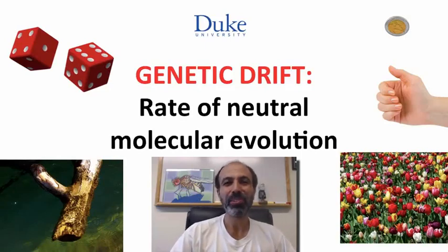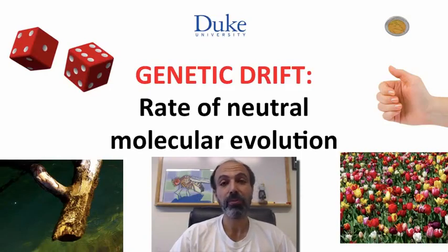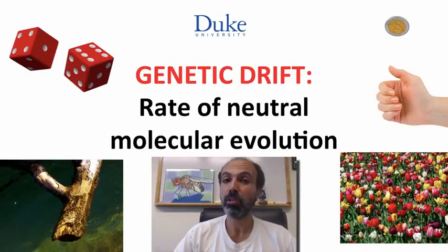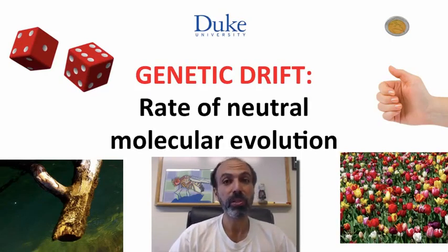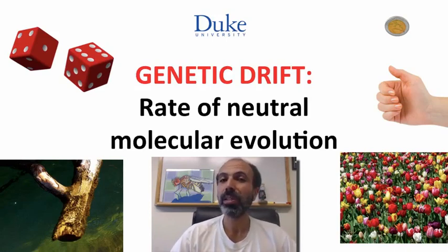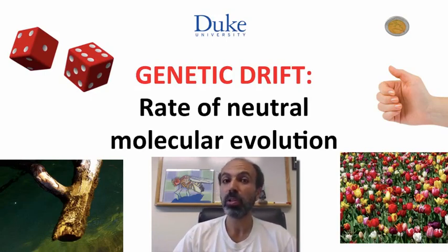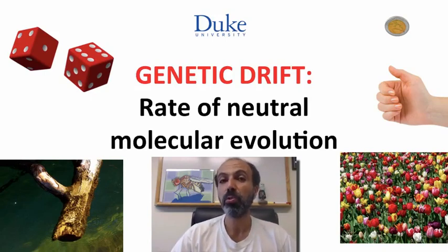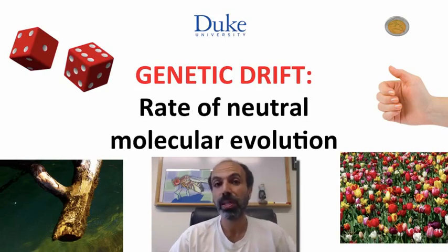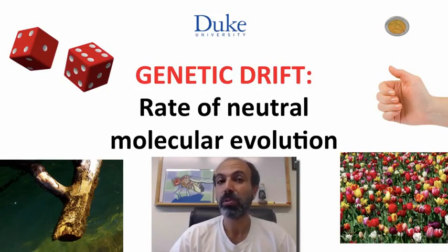Hello, and welcome back to Introduction to Genetics and Evolution. In the previous two videos, we talked about the effects of genetic drift over single generations and over multiple generations. Just to stress some of the points I raised there: in a single generation, genetic drift is about equally likely to make alleles increase as decrease in frequency. Over multiple generations, genetic drift can be somewhat predictable, in that the probability of eventual fixation for any variable allele is equal to the frequency of that allele in the population.